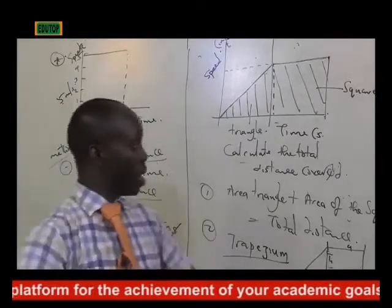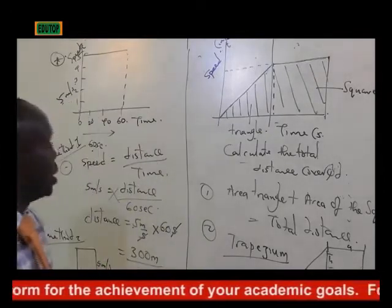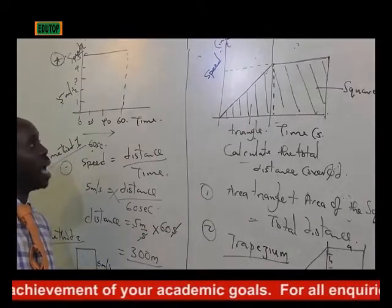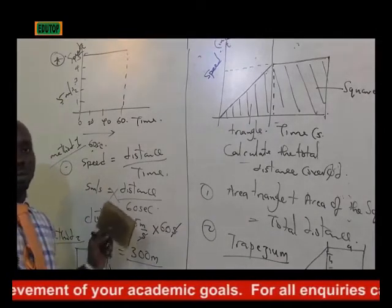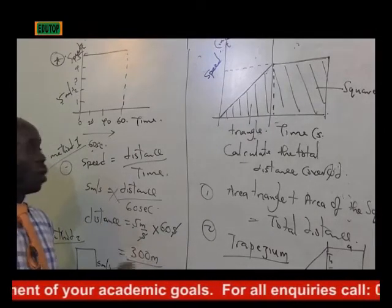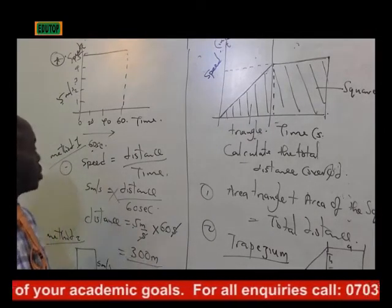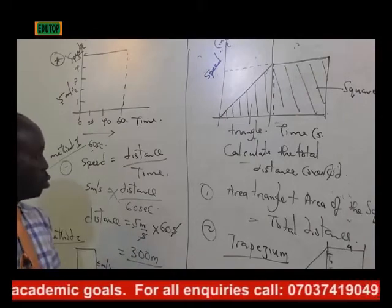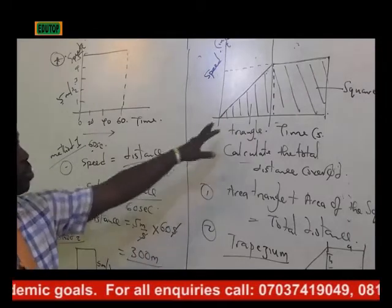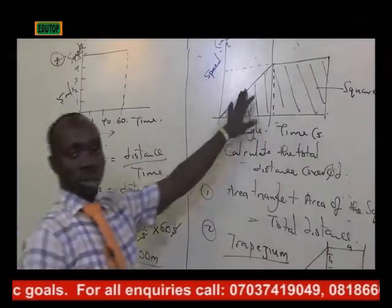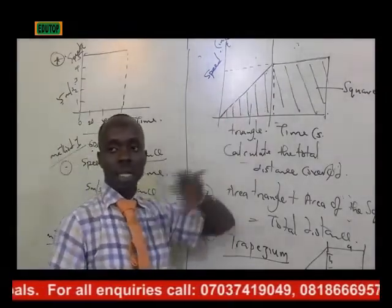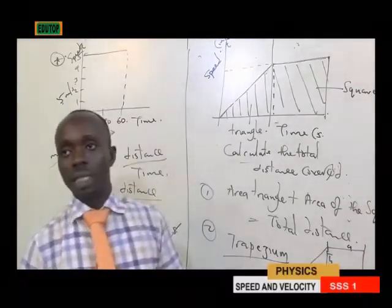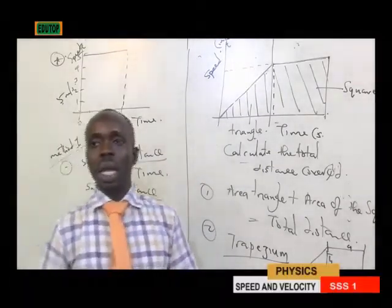So you can definitely calculate your total distance from any speed-time graph. Method 1: use the formula. Method 2: use the area of the shape. Both methods give the same answer. That's the tool we use to find total distance covered.